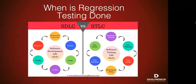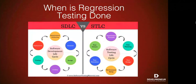When is regression testing done? There's a really good diagram showing the differences between SDLC and the STLC — the software development lifecycle versus the software test lifecycle. Typically, our regression testing will come in at the testing stage on the SDLC and the test execution side on the STLC. Once regression testing is done, on the STLC side we roll into the test closure phase, and on the SDLC side after the tests are closed, the software goes to deployment.